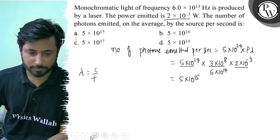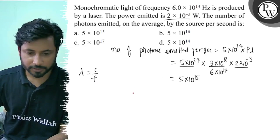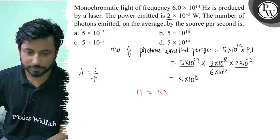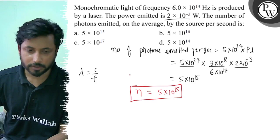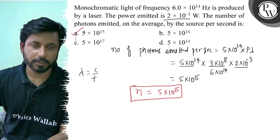So the number of photons emitted per second equals 5 × 10^15 per second. So the final answer is option A. Best of luck.